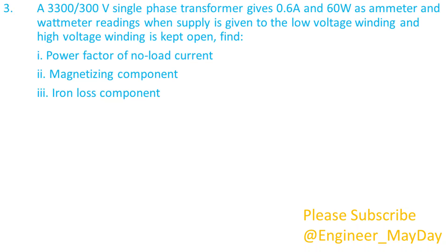Here is a third question. A 3,300 over 300 volts single-phase transformer gives 0.6 amperes and 60 watts as ammeter and wattmeter readings when supply is given to the low voltage winding and the high voltage winding is kept open. Find: 1. Power factor of no-load current. 2. Magnetizing component. 3. Iron loss component.